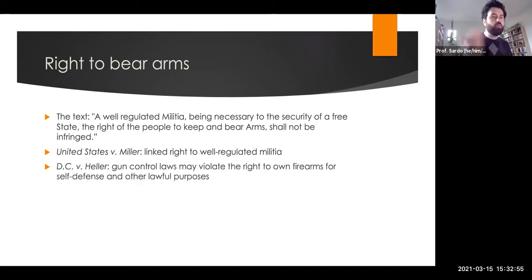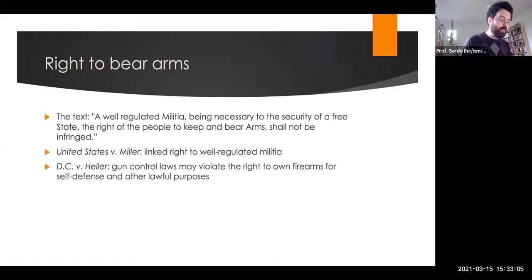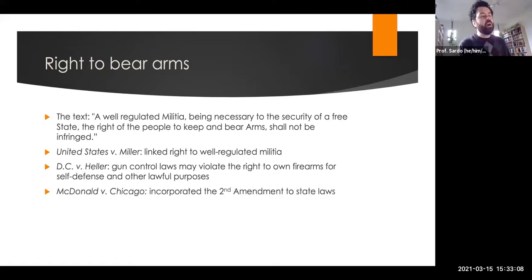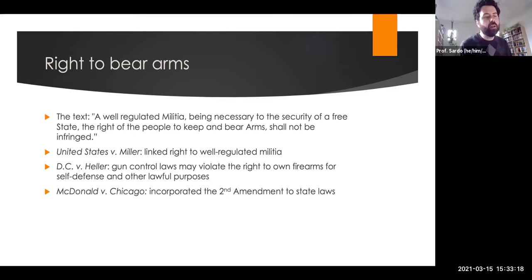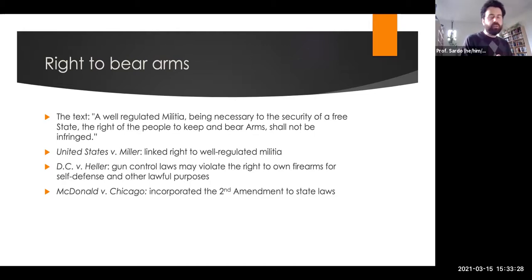That was rolled back in D.C. v. Heller, where the court held that gun control laws may violate the right to own firearms for lawful purposes such as self-defense. Then in McDonald v. Chicago, the Supreme Court held that Second Amendment protections apply to state laws — the state of Illinois could not impose a handgun ban in Chicago. This remains an area of contemporary debate: exactly what does it mean to infringe the right to bear arms, and to what extent can gun control regulation violate this right?